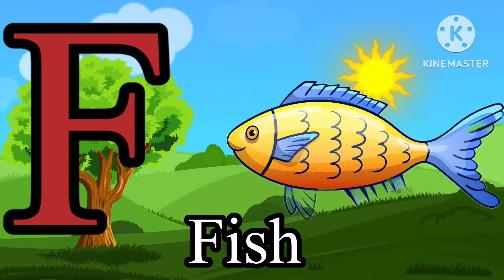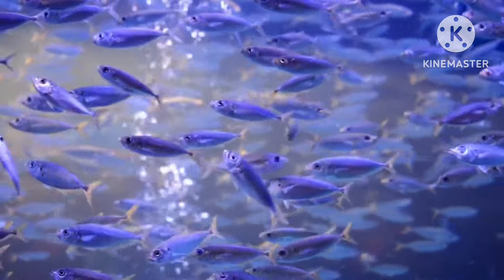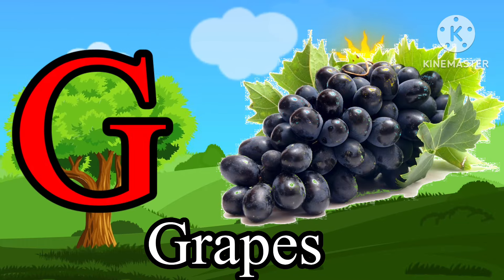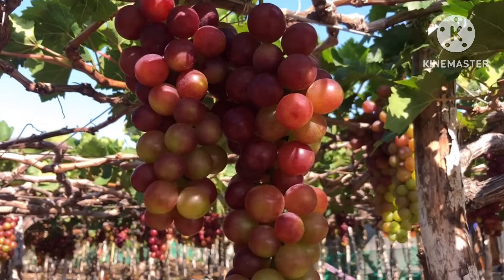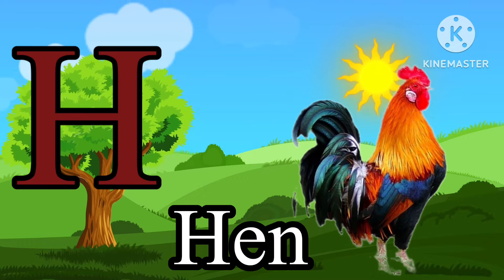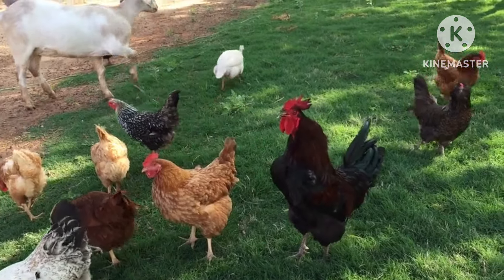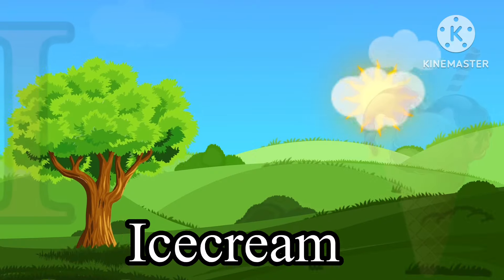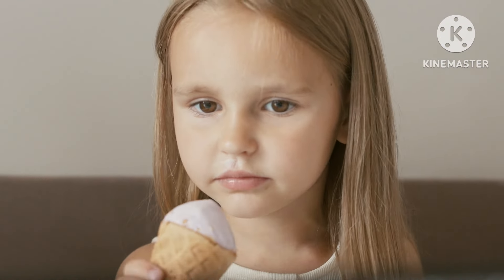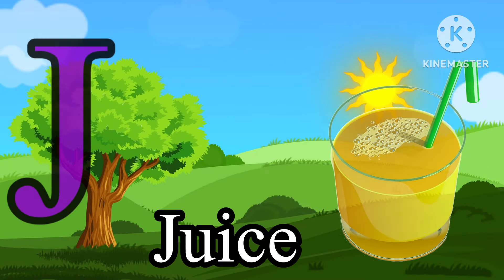F is for fish. G is for grapes. H is for hen. I is for ice cream. J is for juice.